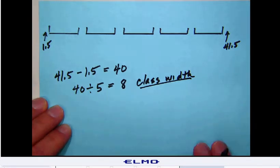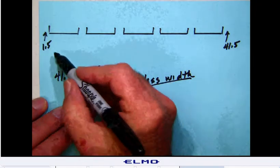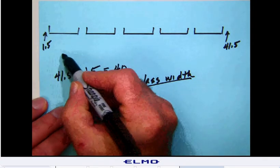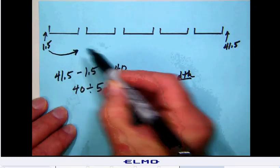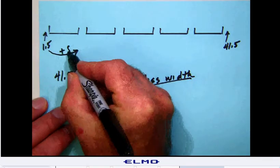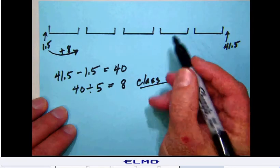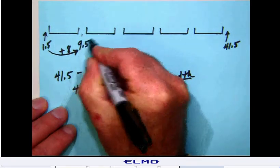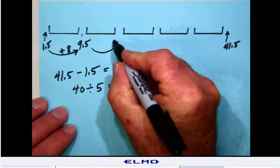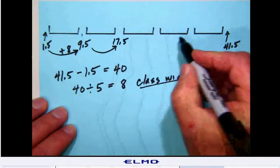Now, knowing that, we can go ahead and pencil in each of the other class boundaries, because remember that 1.5 is our initial class boundary, but now since we know the class width is 8, we can simply add that. So 1.5 plus 8 is 9.5 plus an additional 8 would be 17.5.